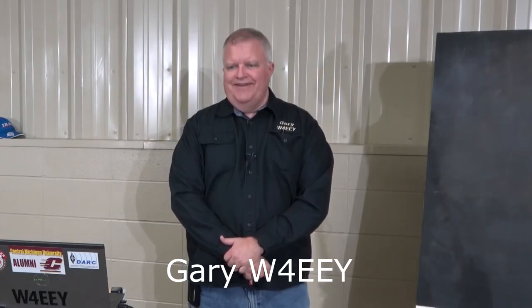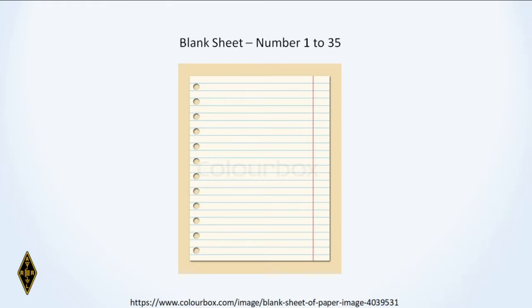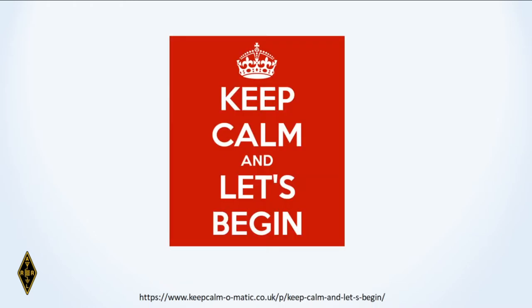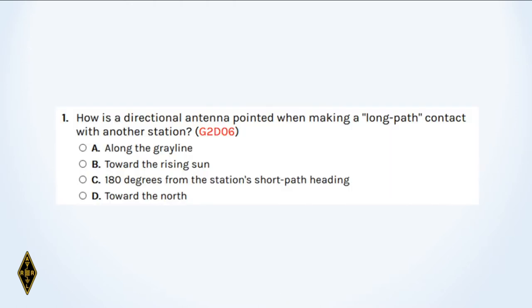All right, practice test number two, here we go. Number your page one to 35 as before. Are we ready? Okay, here we go with question number one: How is a directional antenna pointed when making a long path contact with another station?